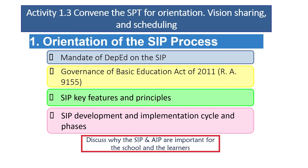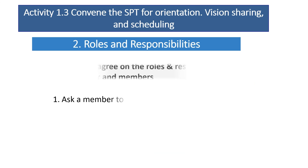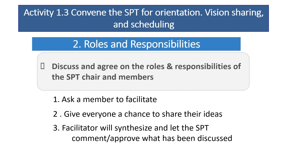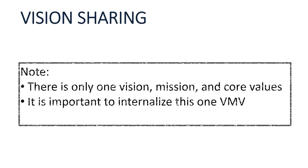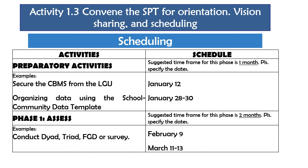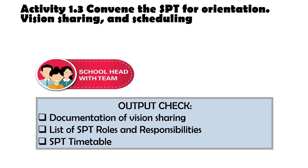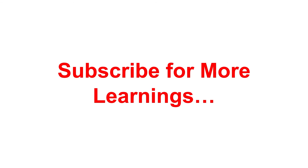Make it worthwhile for participants — not too long, not too boring, but creative and engaging. Discuss and agree on the roles and responsibilities of the SPT chair and members. Ask a member to facilitate and give everyone a chance to share their ideas. The facilitator will synthesize and let the SPT comment and approve what has been discussed. For vision sharing, there is only one vision, mission, and core values — it's important to internalize this. Show them the timeline for Phase 2. The outputs of this step include: documentation of vision sharing, list of SPT roles and responsibilities, and the SPT timeline.